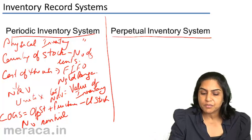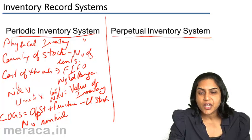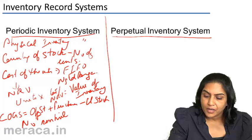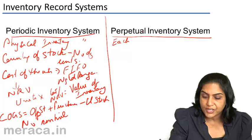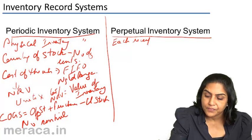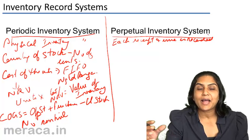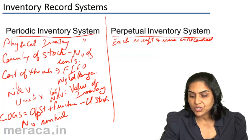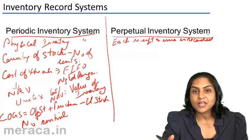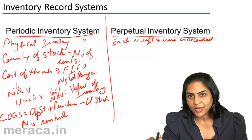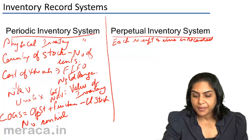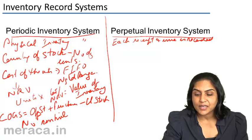The perpetual inventory system, on the other hand, involves recording of every purchase and issue of inventory. An entry is made in a store's ledger, the format of which we shall see in a while. Each receipt and each issue is recorded. With every receipt and every issue, the balance of inventory changes, so at any point in time, by looking at the store's ledger, we would know the balance of inventory. Therefore, it is easy to prepare final accounts at any time during the year.